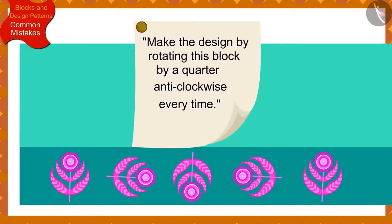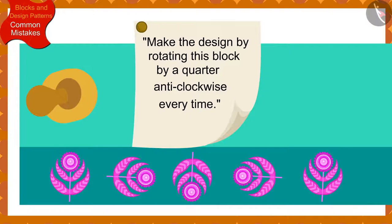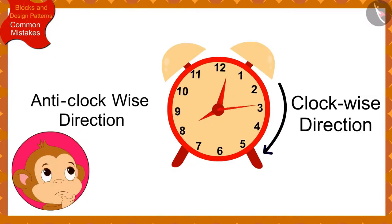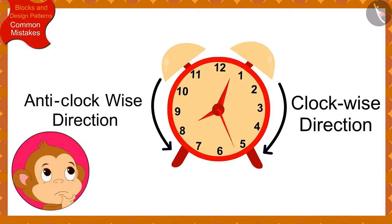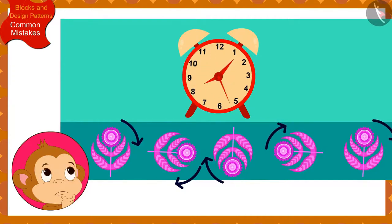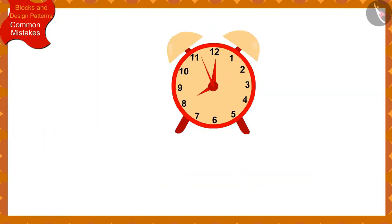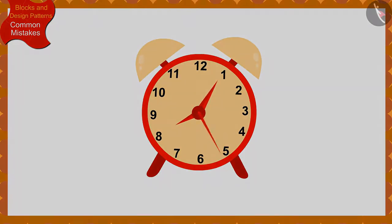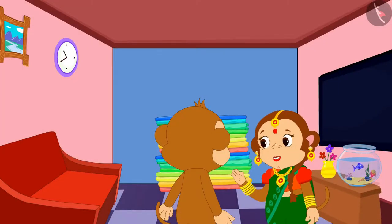Actually, as per the instructions written by Banno, Babban had to rotate the block by a quarter in the anti-clockwise direction every time. But Babban got confused between the clockwise and anti-clockwise directions and accidentally made the pattern on the saree by rotating the block by a quarter in the clockwise direction every time. Children, remember — whenever you want to know the clockwise direction, look at the direction of the movement of the needles in a clock. Banno explained Babban's mistake to him.